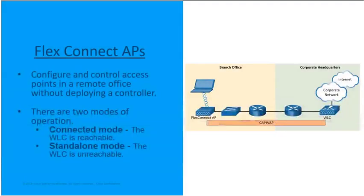FlexConnect is a powerful wireless solution for branch offices and remote office deployments. This allows you to configure and control access points in a branch office or remote office from the corporate office through a WAN link — a wide area network — without deploying a wireless LAN controller in the office with the access points. There are two modes of operation for the FlexConnect AP, which is the access point in the branch office.